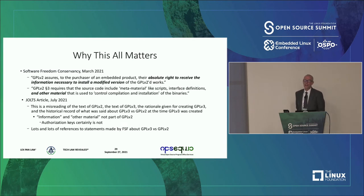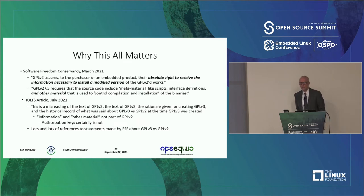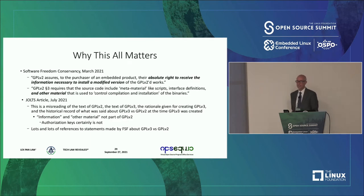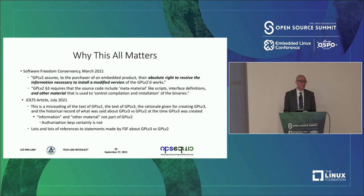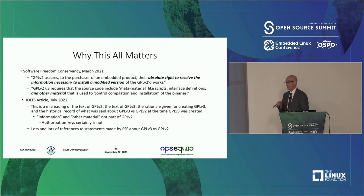Here's what I think the debate is. In March 2021, the Software Freedom Conservancy was talking about GPL v2 and saying: if you get GPL v2 code, you have the absolute right to receive the information necessary to install a modified version of that work — and that includes scripts, interface definitions, and then they add in something that's not in the license: other material used to control compilation and installation of the binaries. I didn't agree with that position and thought they were trying to read some things from GPL v3 into GPL v2.